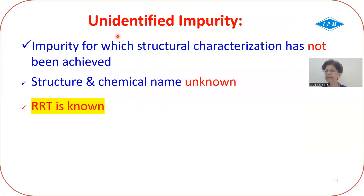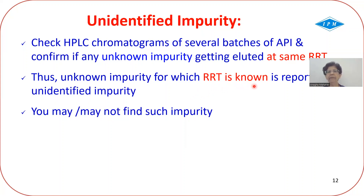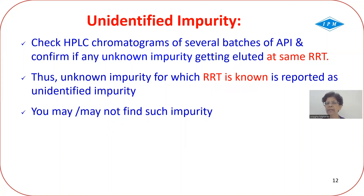The next term is unidentified impurity, which is the opposite of identified. Here you are not able to achieve structural characterization — you don't know the structure or the chemical name. What is known is the relative retention time: this impurity elutes at a specific RRT. It is unspecified because the structure is unknown, but it can be reported as 'unidentified impurity at RRT X.'